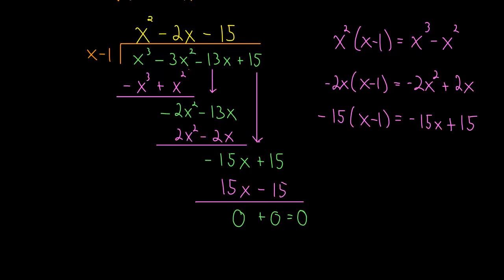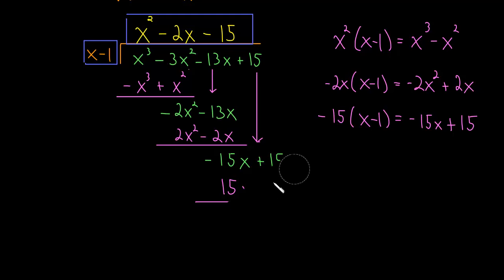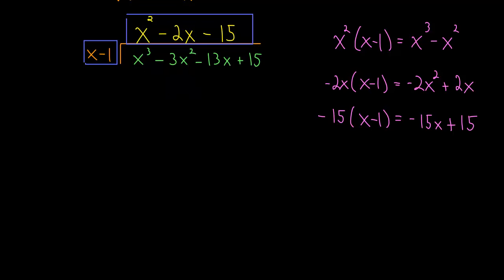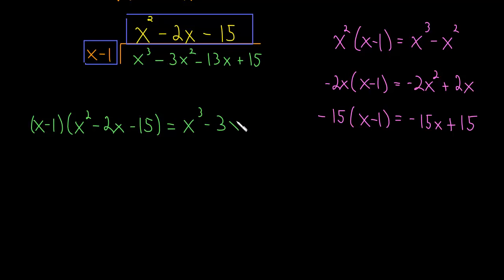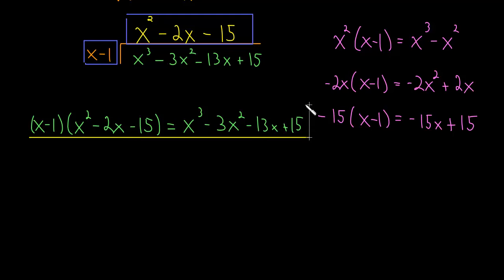This tells us that x minus 1 times x squared minus 2x minus 15 equals our original polynomial x cubed minus 3x squared minus 13x plus 15. So we've figured out how to factor our cubic polynomial.